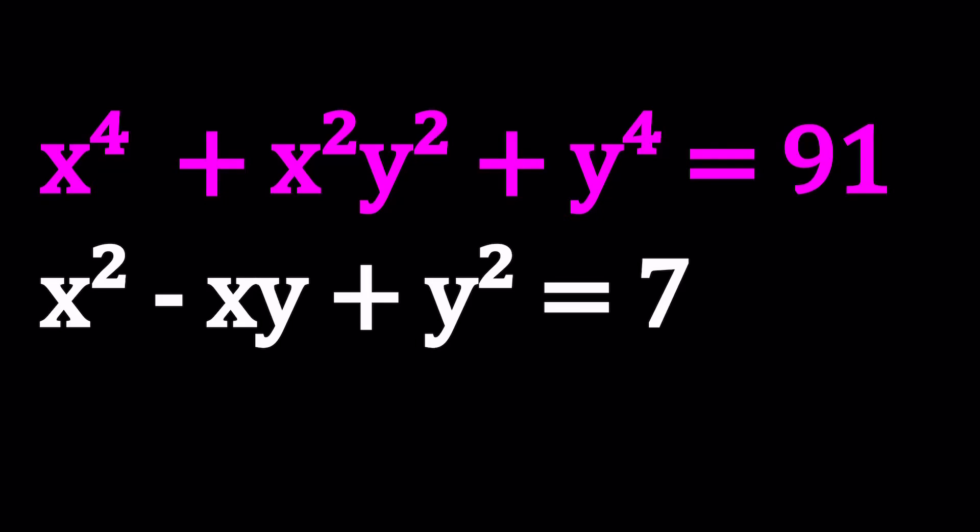Hello everyone. In this video, we're going to be solving a polynomial system of equations. We have x to the fourth plus x squared y squared plus y to the fourth equals 91, and x squared minus xy plus y squared equals 7. And we're going to be solving for x and y.